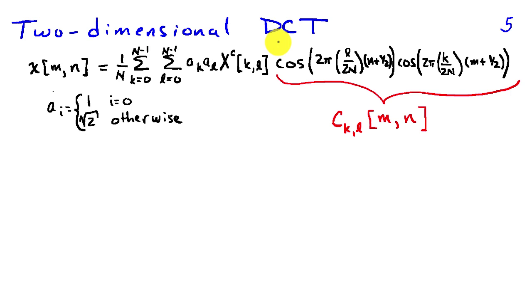So the two-dimensional discrete cosine transform expresses an image, x of m, n, in what looks like a very complicated formula. We're going to group the coefficients together, and we can also group the product of the two cosines into a basis image.